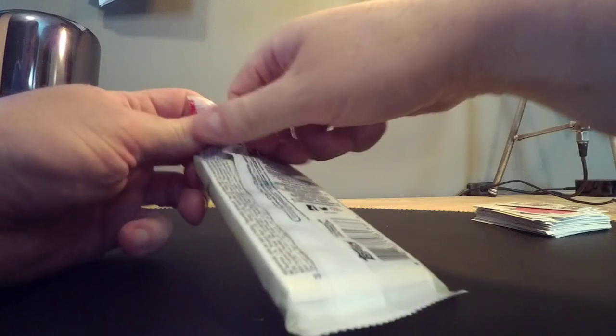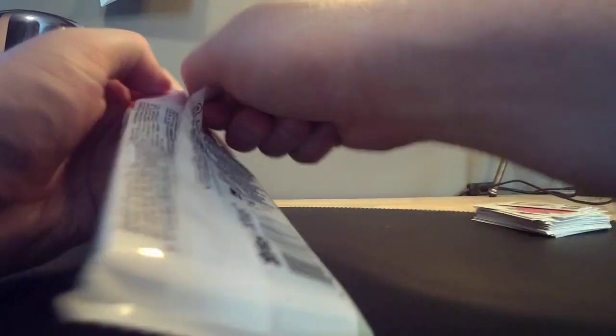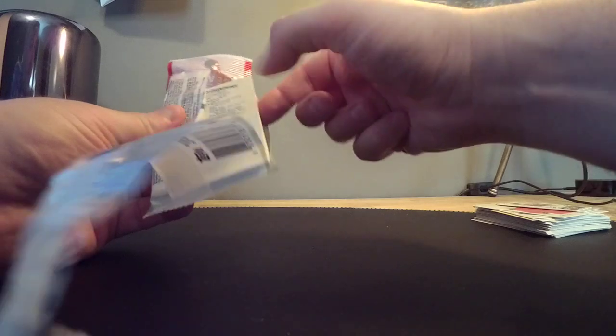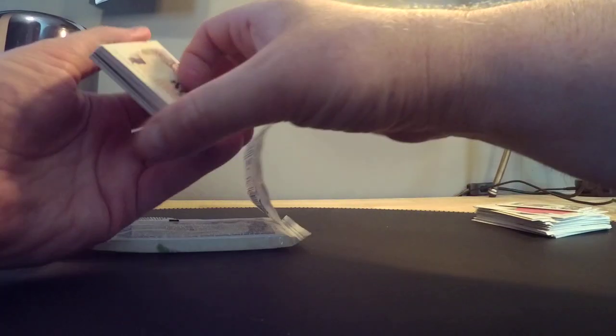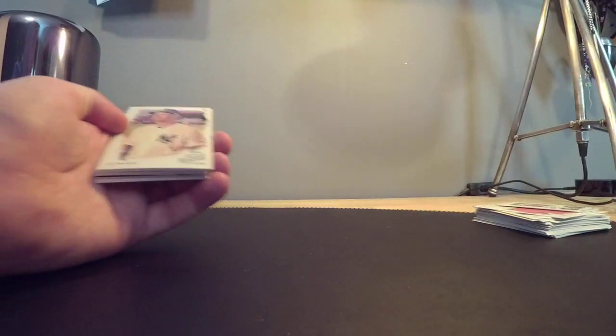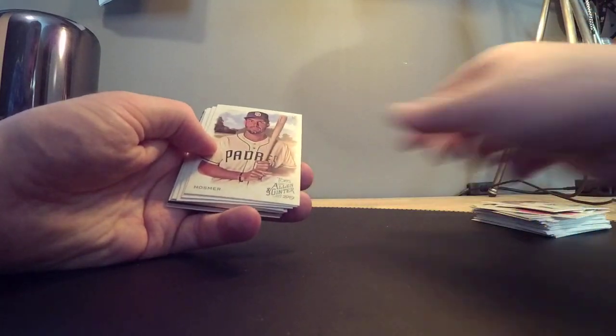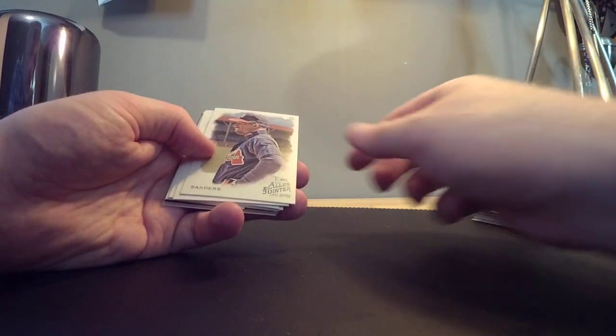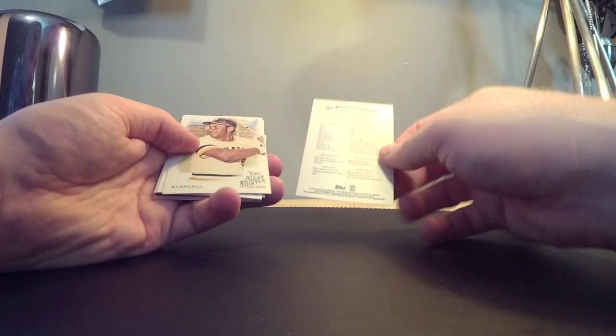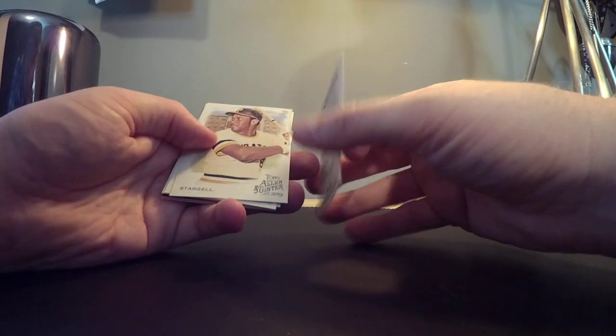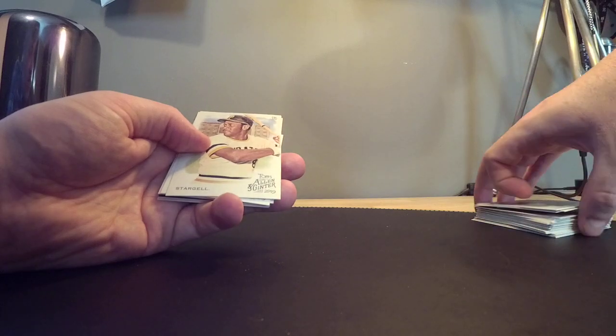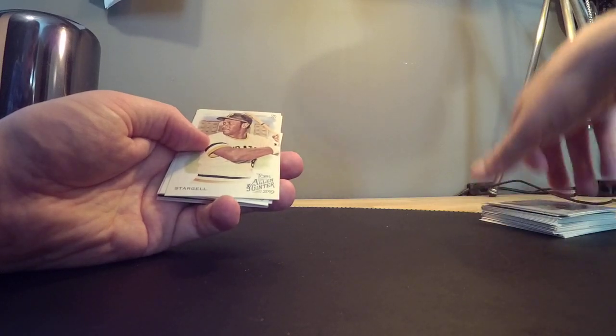Last pack we have here. Let's look at some good inserts again. Adam Ottavino. Eric Hosmer. Deion Sanders. Looking old in this one. Wanted to be Bo Jackson, just couldn't.